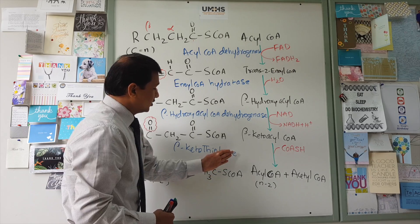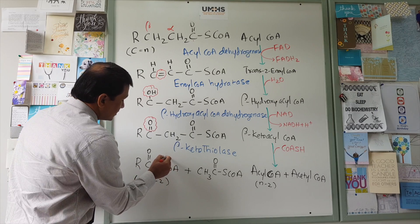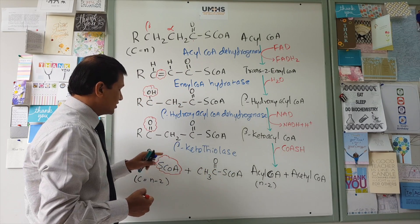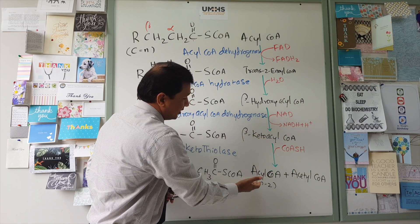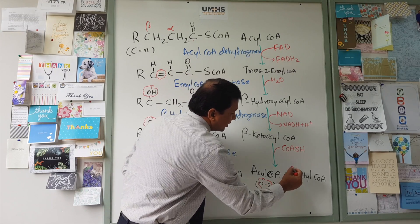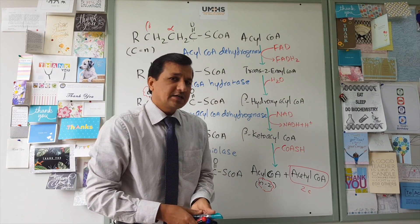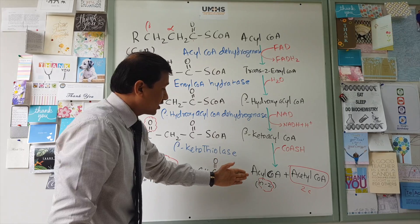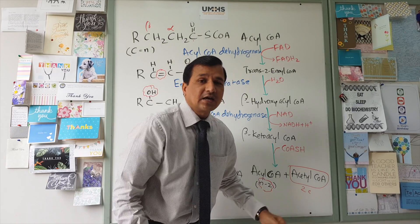Beta-ketoacyl-CoA undergoes a thiolase reaction catalyzed by beta-keto-thiolase, where CoA-SH enters the reaction. The molecule is broken down: beta-ketoacyl-CoA is cleaved into acyl-CoA with N minus 2 carbons, and the 2 carbons removed are released as acetyl-CoA.